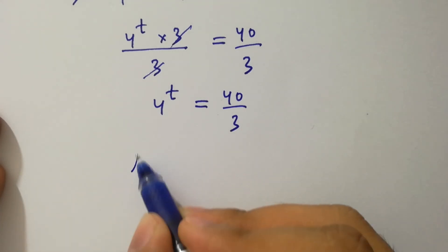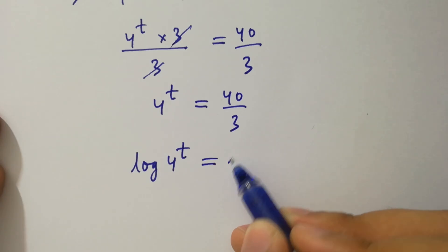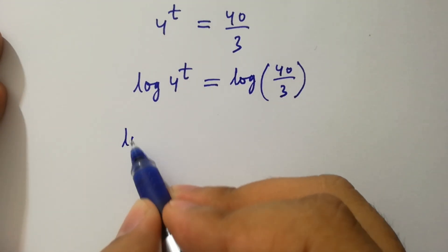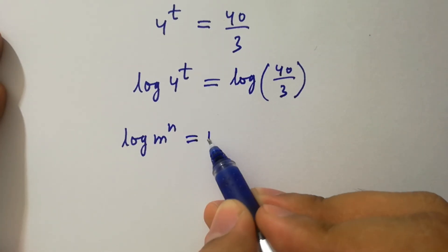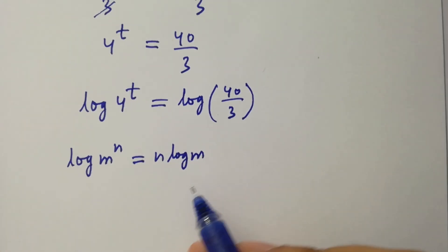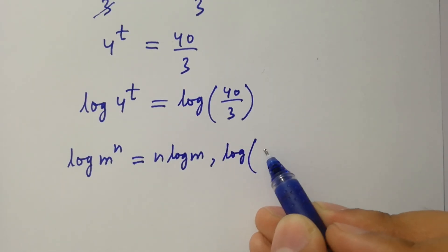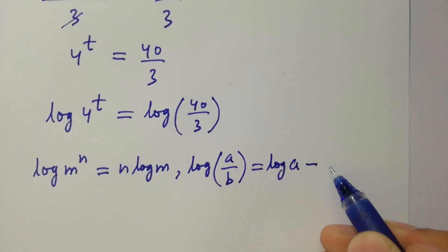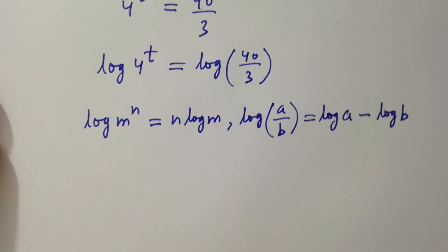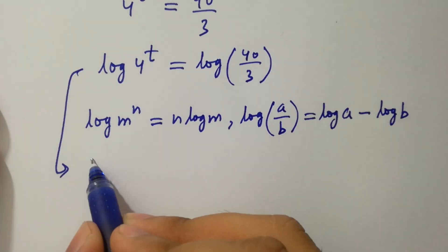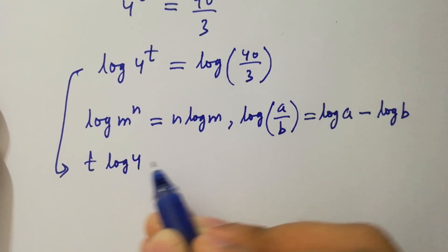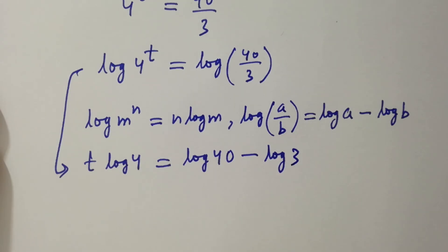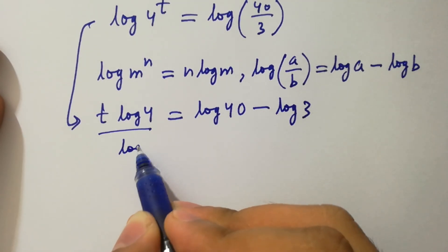Take log on both sides. Since log m to the power n equals n log m, and log a over b equals log a minus log b, it will be t log 4 equal to log 40 minus log 3. Then divide by log 4 on both sides.